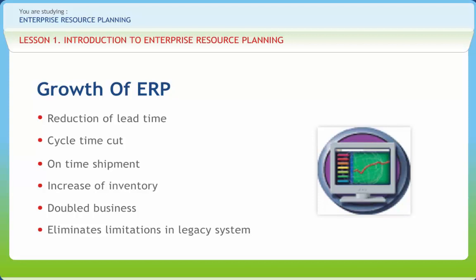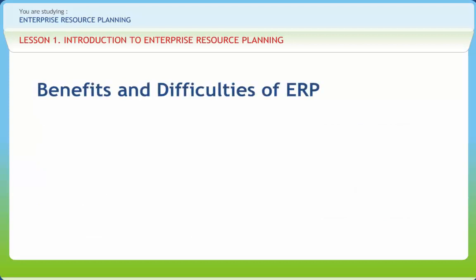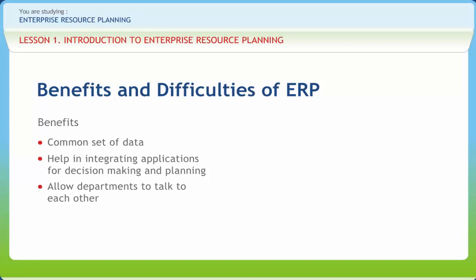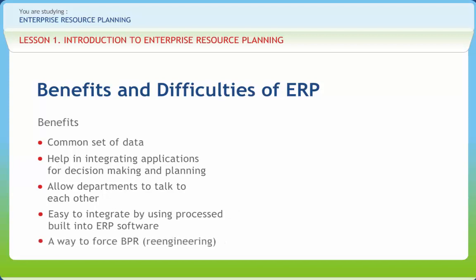ERP brings suppliers and customers together by ensuring a smoother flow of information at all levels and parts of the organization. ERP helps to make decisions at the right time and by the right person, as the entire organization shares the same information and views, providing powerful support to decision making. The benefits of ERP include a common set of data, help in integrating applications for decision making and planning, allowing departments to communicate with each other, easy integration using process services built into ERP software, and a way to force business process re-engineering.